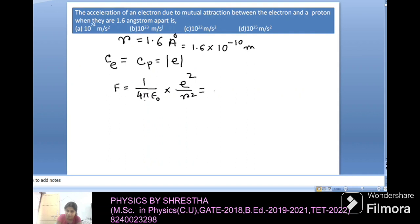The value of 1 by 4 pi epsilon naught is 9 multiplied by 10 to the power 9. And value of e square means 1.6 multiplied by 10 to the power minus 19 multiplied by 1.6 into 10 to the power minus 19. And value of r is given here, 1.6 multiplied by 10 to the power minus 10. After cancellation...